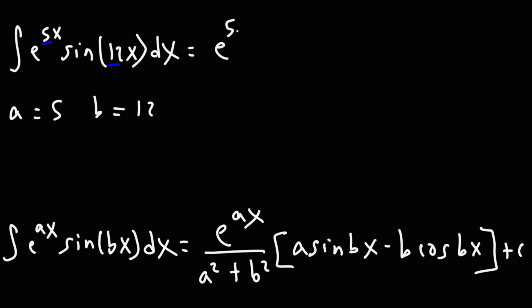So e to the ax, that's e to the 5x, divided by a squared—5 squared—b squared is 12 squared, and then a sine bx, a is 5, sine 12x, minus b cosine bx, so that's negative 12 cosine 12x, and then plus c.